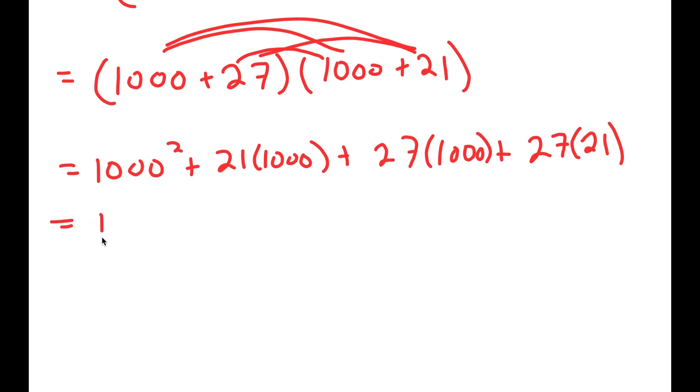Now, 1,000 squared is 1,000,000. 21 times 1,000 is 21,000. 27 times 1,000 is 27,000. And finally, 27 times 21 is 567.